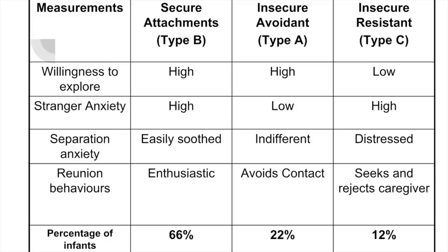The next most common type was type A — insecure avoidant. This child would also explore the room, wouldn't mind when the stranger came in, wouldn't necessarily mind when the mother left, and when the mother came back again wouldn't mind either. They were quite independent. Think of an avoidant infant as independent. That was found in about 22% of cases. The last type was the resistant infant — type C. This was clingy, didn't leave the mother's side, so didn't explore the room. Stranger anxiety was high, really distressed when the mother left, and when she came back they went to seek her but almost then rejected her — still upset from the leaving. Really clingy. That was found in the least percentage, 12% of the time.